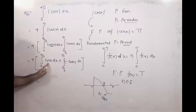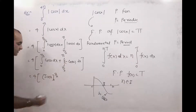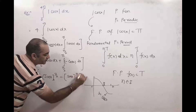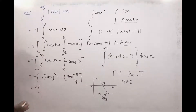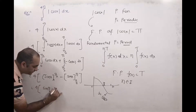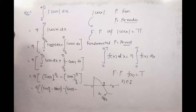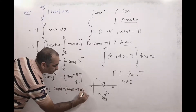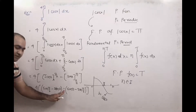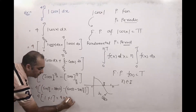So we get 4 times: integral of cos x gives sin x, with limits 0 to π/2, minus integral of cos x gives sin x, with limits π/2 to π. This gives 4 times: [sin(π/2) − sin(0)] − [sin(π) − sin(π/2)] = 4 times: [1 − 0] − [0 − 1] = 4 times [1 + 1] = 4 times 2 = 8. So the answer is 8.